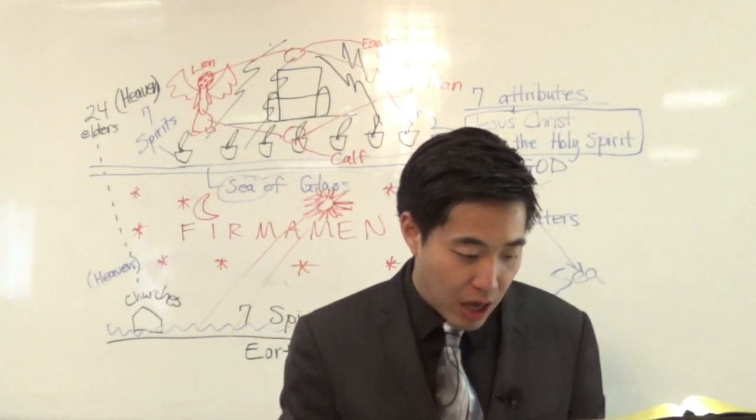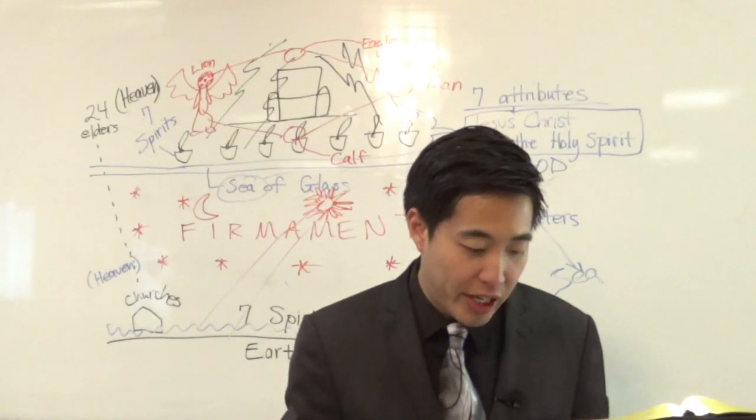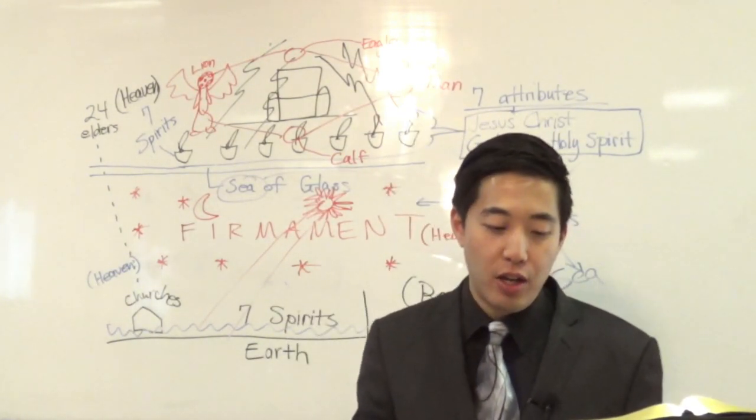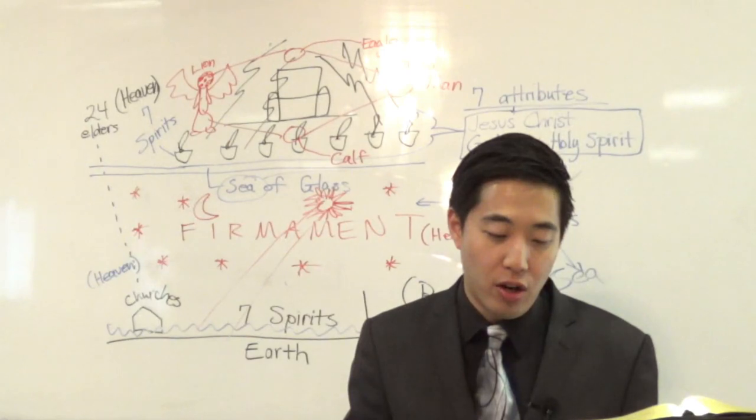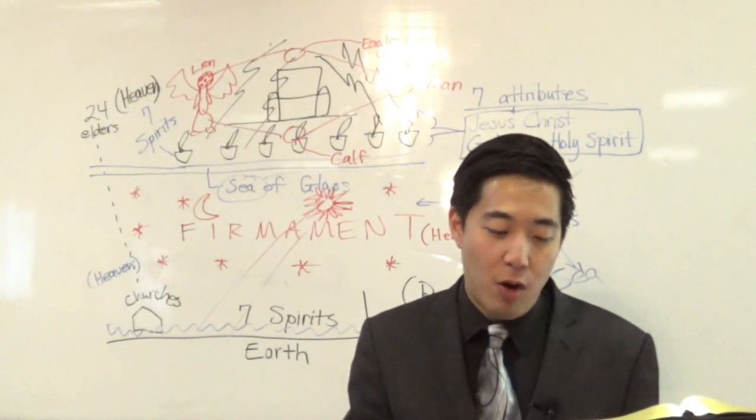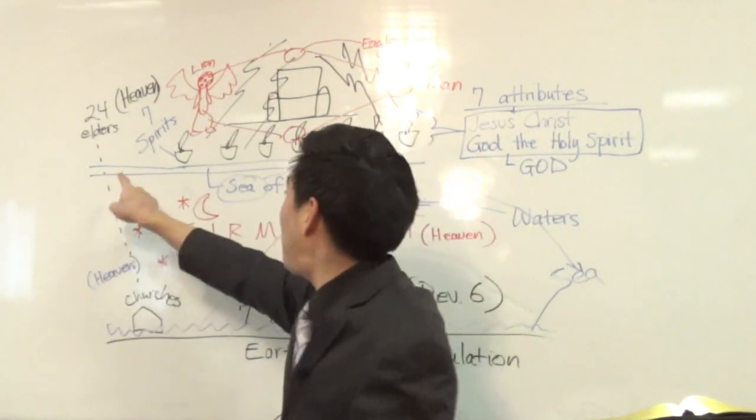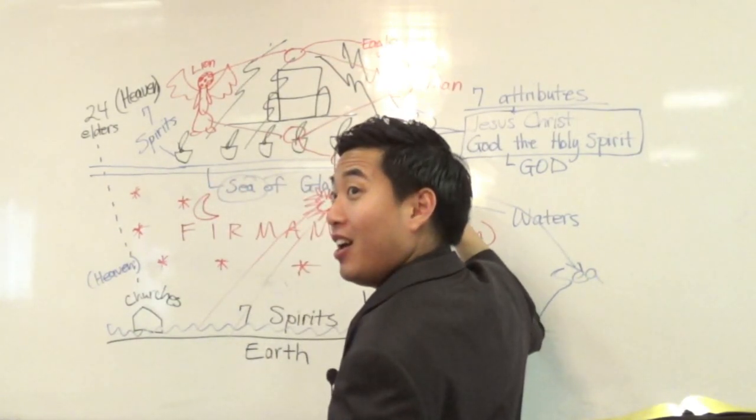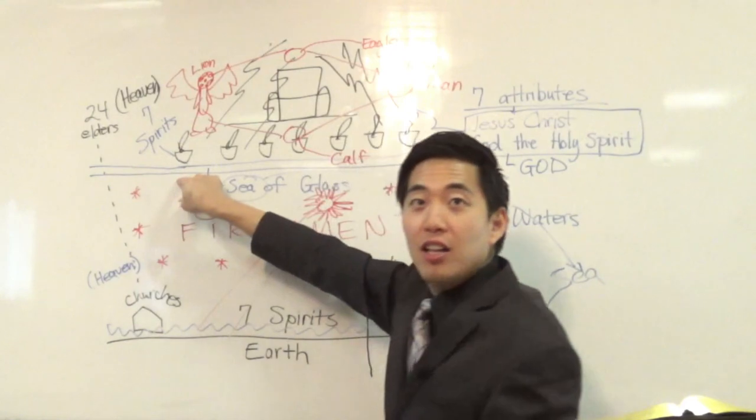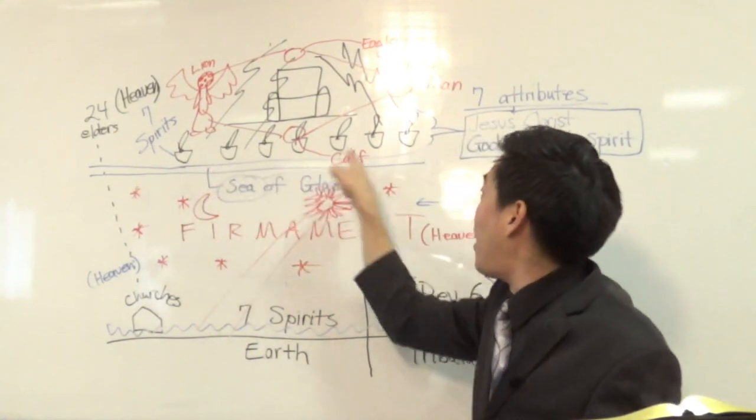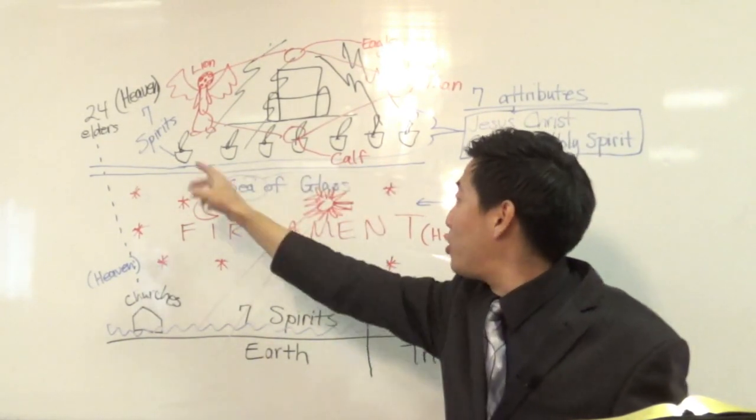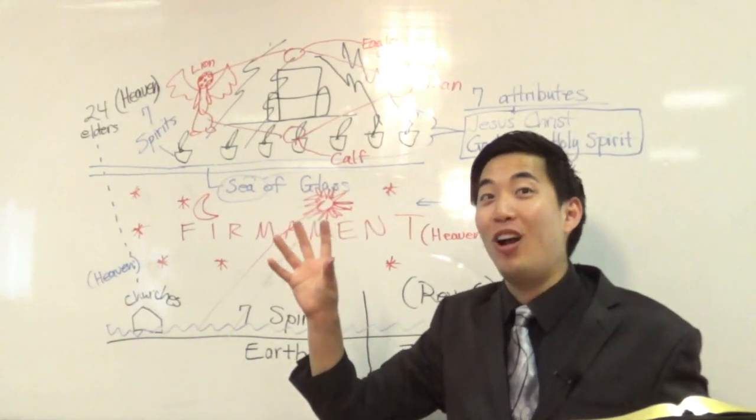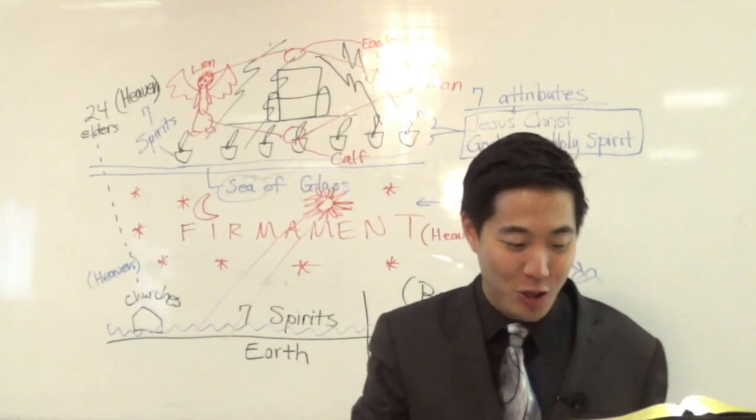You'll notice that the Bible says at verse 22, And the likeness of the firmament upon the heads of the living creature was as the color of the terrible crystal stretched forth over their heads above. This makes sense. See that? This is the sea of glass right here. Notice it says above the firmament. Oh, Scripture with Scripture makes it more enlightening. It's an amazing book you got over here.